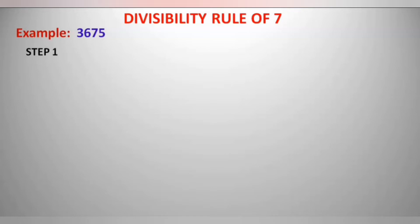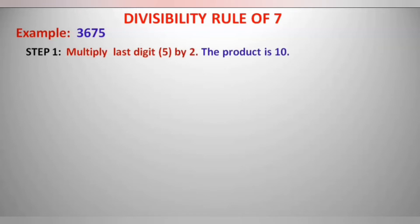Do you know the divisibility rule for 7? Come, let us learn with an example. Let us check if 3675 is divisible by 7 or not. Step 1: multiply the last digit of 3675, that is 5, with 2. The product becomes 5 into 2, which is 10. Now subtract this 10 from the rest of the number.